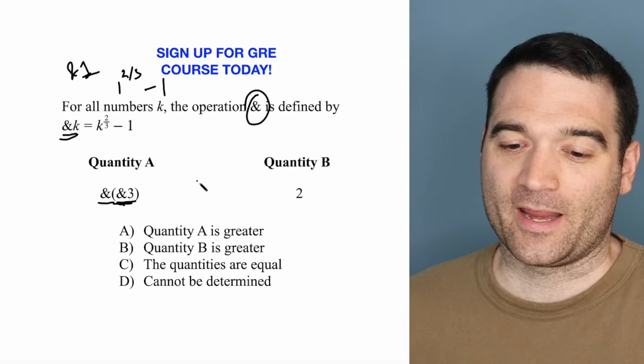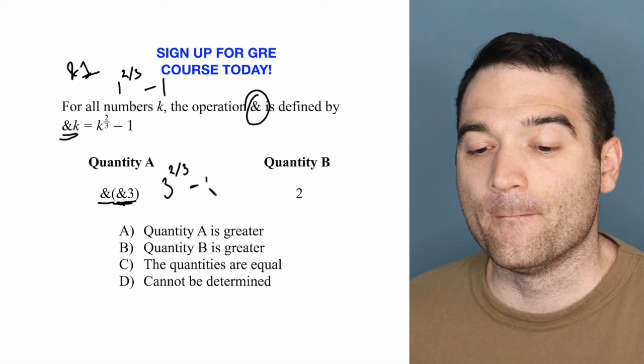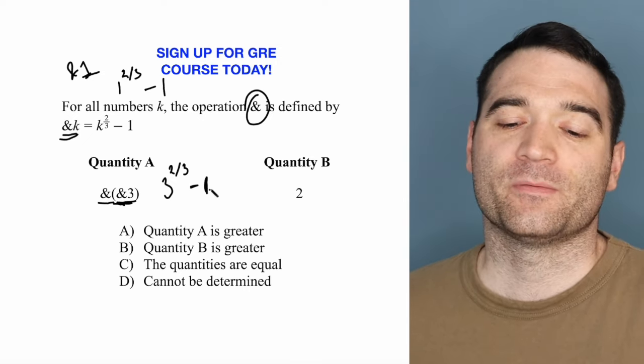Take ampersand three. Ampersand three is three to the power of two-thirds minus one. So far, so good? Three to the power of two-thirds minus one.